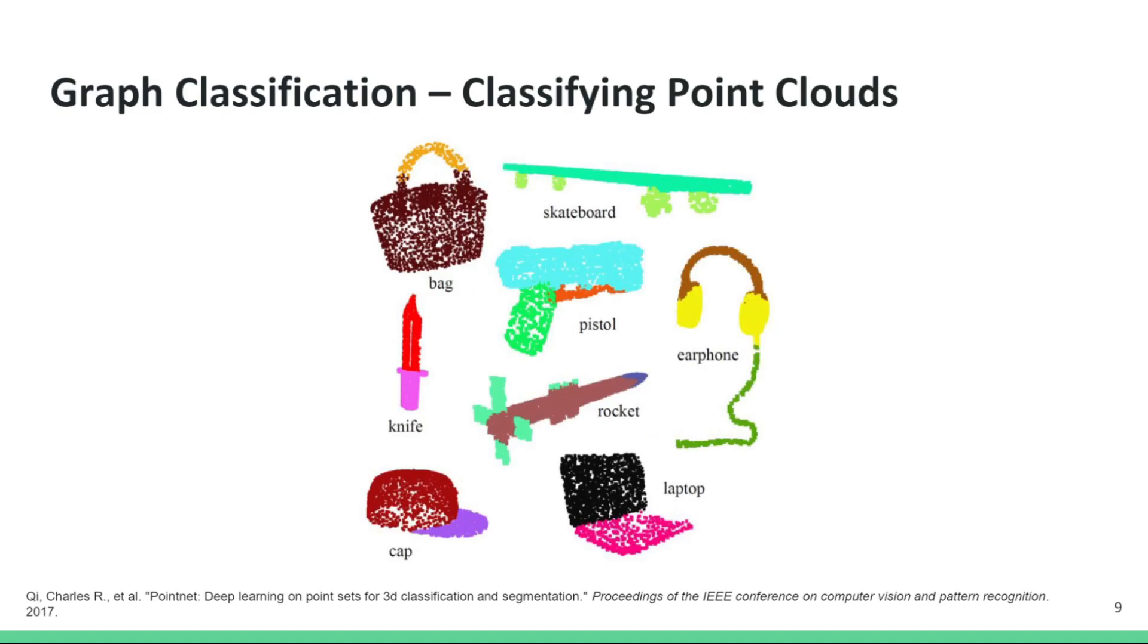One application of graph classification is classifying point clouds. Similar to image classification, where the input is a 2D image and the output is a label, here the input is an unstructured graph, and the output is a label, such as a bag, a laptop, and so on.